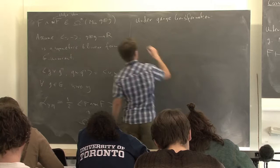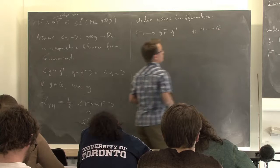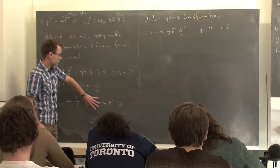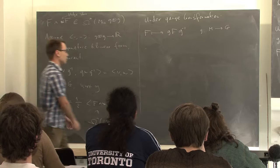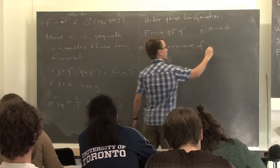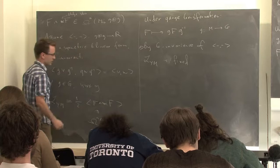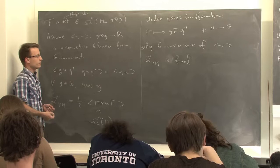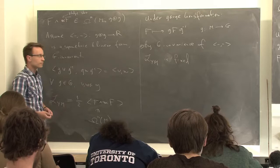Under gauge transformation the curvature changes by conjugation. So you have g, a map from M to the group. By G-invariance of the pairing, the Lagrangian density stays the same — you have two elements of the Lie algebra and you conjugate them simultaneously: conjugation of F and conjugation of star F by the same element. By this relation, the value of the pairing stays the same. So this is well-defined.